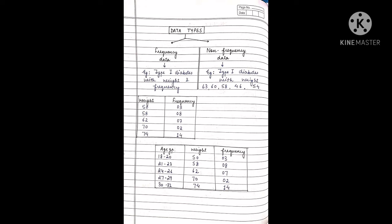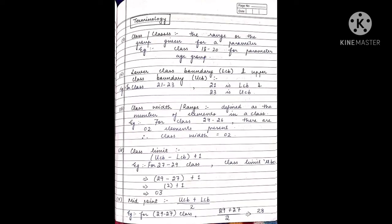Before solving numericals, let's look at some terminologies that will be useful. First is class or classes. Like we saw age groups 18 to 20 or 21 to 23, these ranges are our classes, meaning the group given for a particular parameter. Next are lower class boundary and upper class boundary.